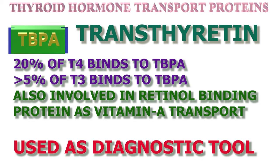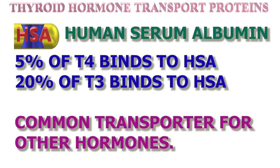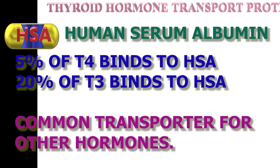Transthyretin (thyroxine-binding prealbumin) binds only about 15 to 20 percent of circulating thyroid hormone, has lower affinity to hormones, and thus dissociates fast for immediate delivery to cells. Transthyretin is the major transport protein for cerebrospinal fluid (CSF). Human serum albumin binds about 5 percent of circulating T3 and T4; it has lower affinity to thyroid hormones and is associated with many other enzymes. Fluctuating albumin levels have no effect on thyroid hormone levels. Free T4 is the primary product of the normal thyroid gland.